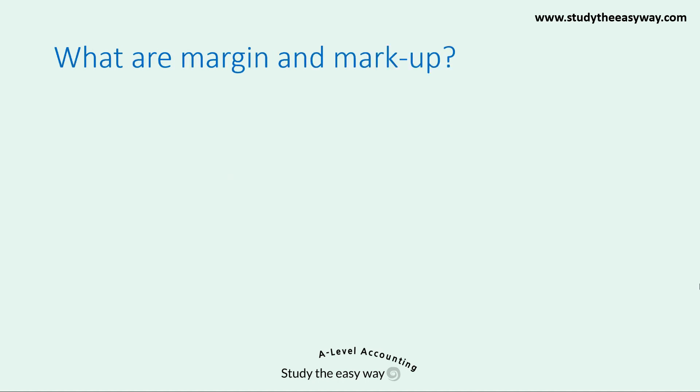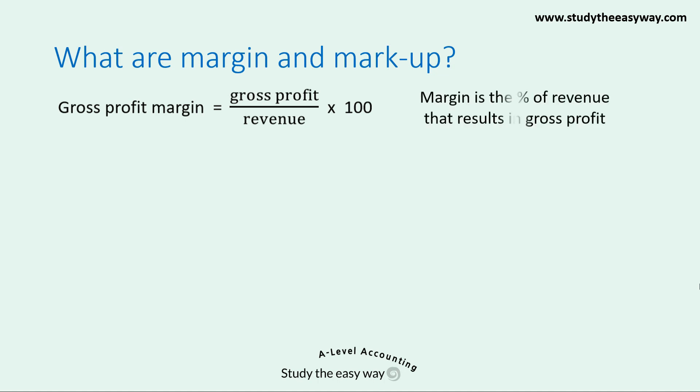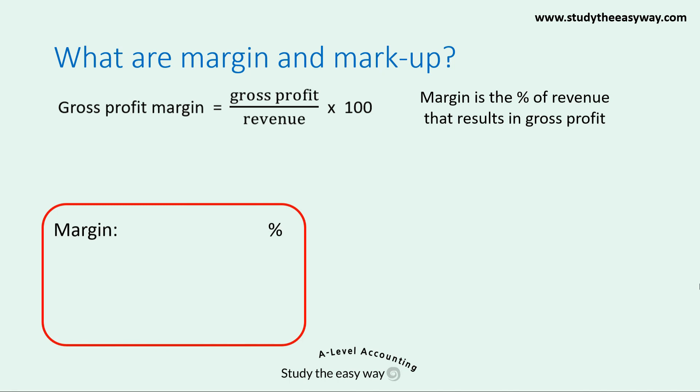What are margin and markup? Let's start off with the definition. Gross profit margin is calculated as gross profit divided by revenue, multiplied by 100, so it's stated as a percentage. Margin is the percentage of revenue that results in gross profit.